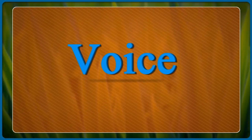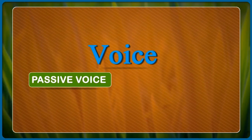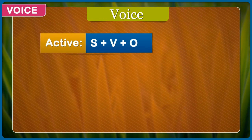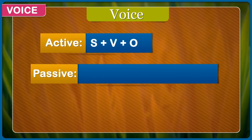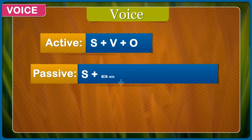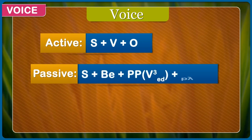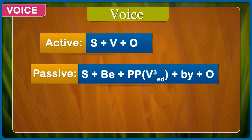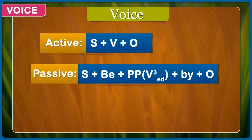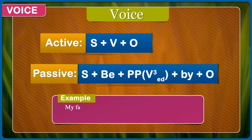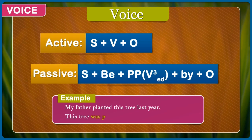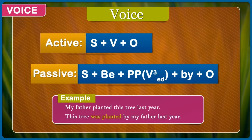Voice. Passive voice. Active voice. Passive voice. Active: subject + verb + object. Passive: subject + be + past participle (third form of verb / -ed) + by + object. Example: My father planted this tree last year. This tree was planted by my father last year.